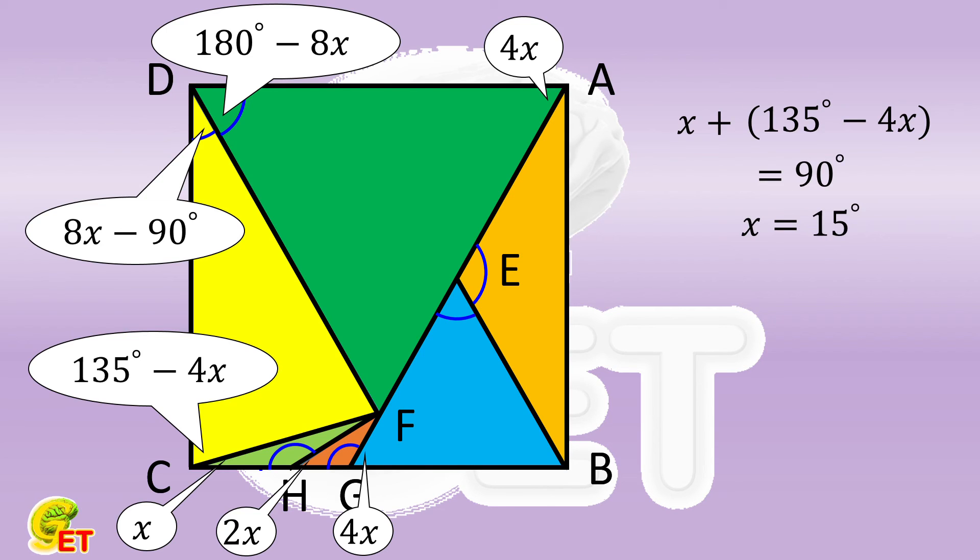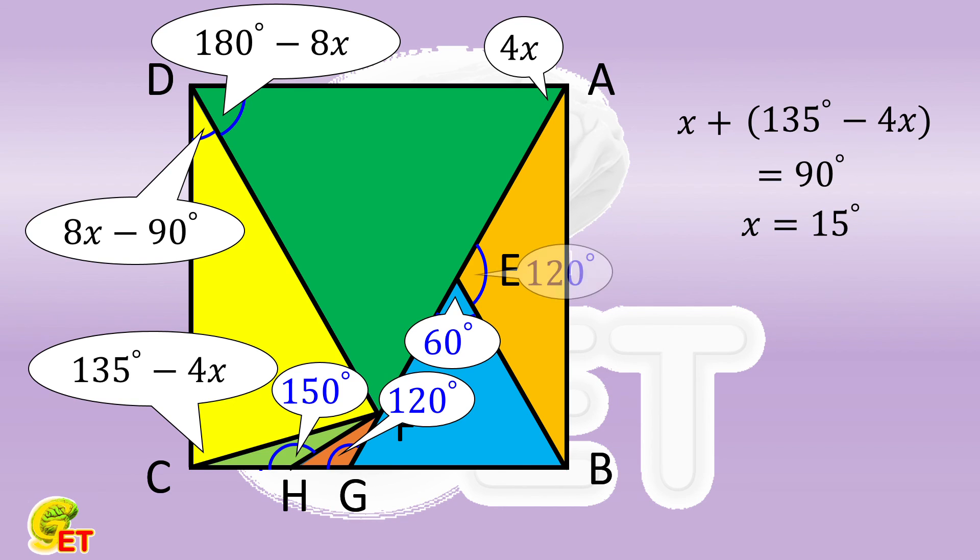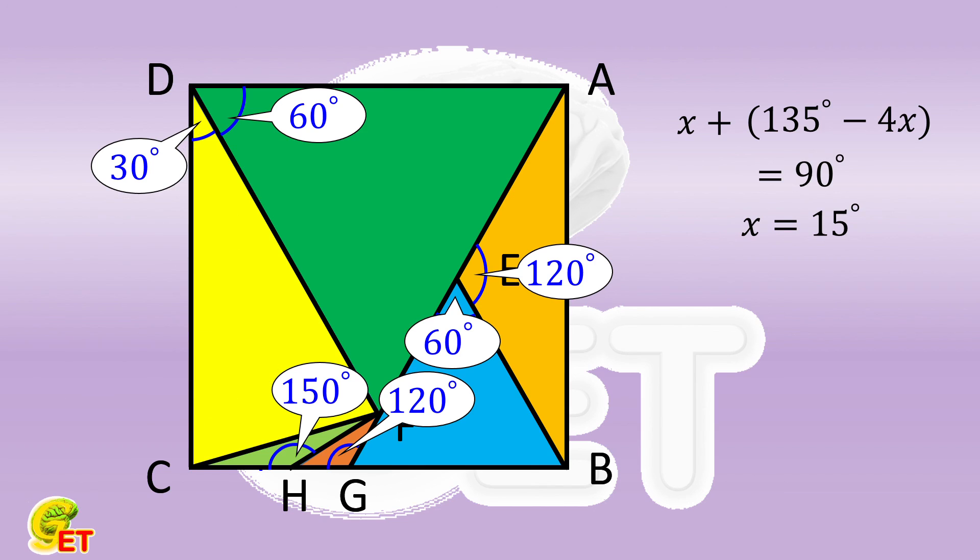Now, we can find each vertex angle, which are 150 degrees, 120 degrees, 60 degrees, 120 degrees, 60 degrees, and 30 degrees. Of course, an isosceles triangle with a vertex angle of 60 degrees is in fact an equilateral triangle. Thank you for watching, and see you next time.